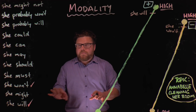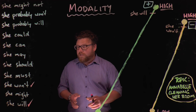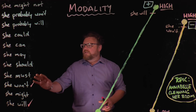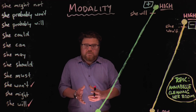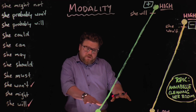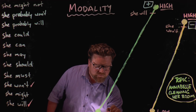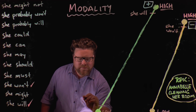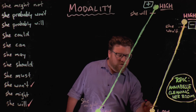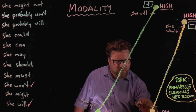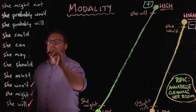At the other end of the scale, we want those modal verbs that describe with less certainty whether she is going to clean her room or not. We're looking for words like 'she might.' 'She might' has that uncertainty in it — we don't know if she might or she might not. So 'she might' and 'she might not' are both low modality. 'She might' goes on the positive side, 'she might not' on the negative side, but both are just as low in terms of our certainty.